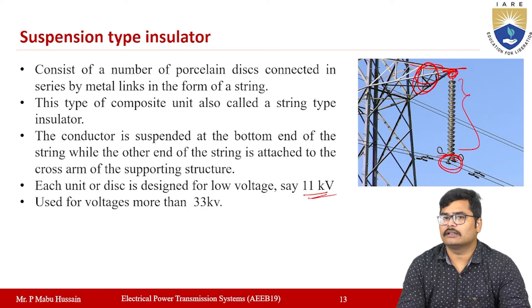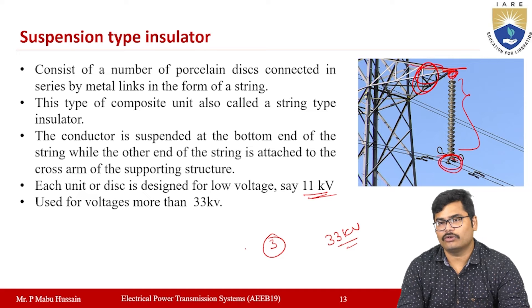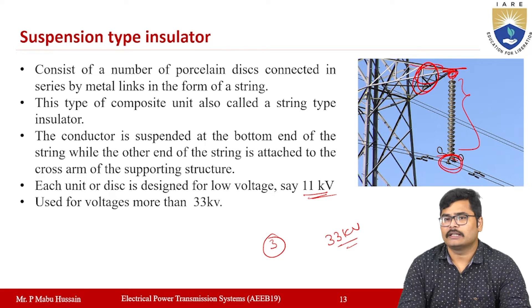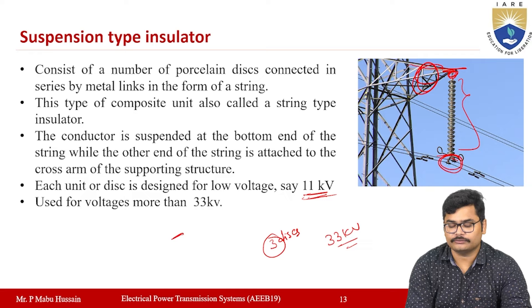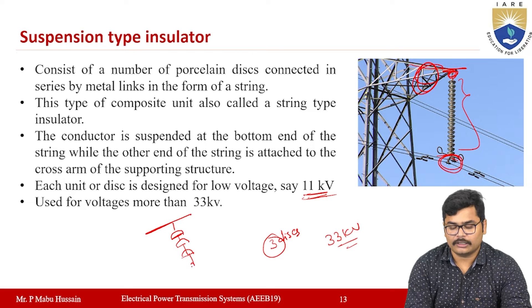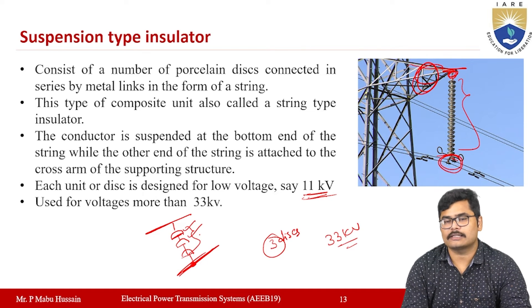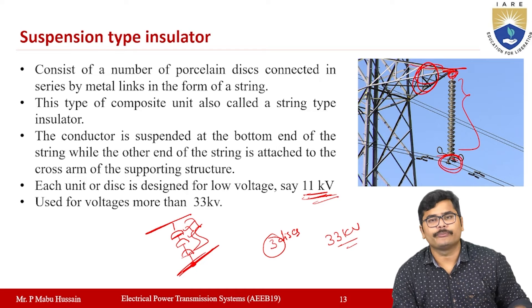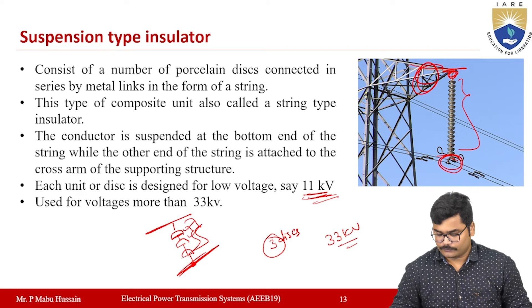If you want to use the suspension type insulator for a 33 kV system, you need to connect three discs in series, since each disc handles 11 kV. Those three discs are connected in series with metallic links, and the live conductor is connected at the bottom. The total string of insulators will support up to 33 kV. By adding more discs in series, the voltage level of the system can be increased.